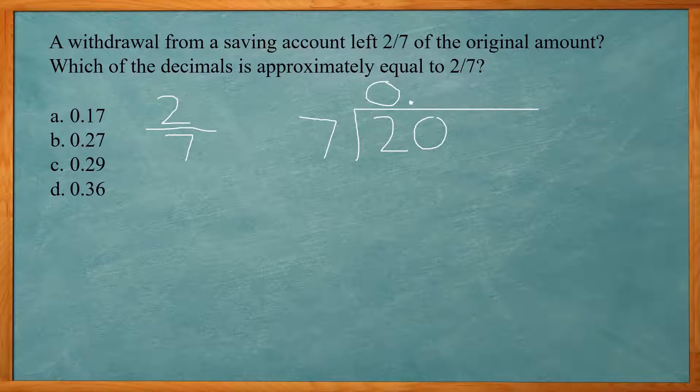So seven times two is 14. Seven times three is 21. 21 is too high. So we got to go with two. Two times seven is 14. Write that underneath here. Now you do 20 minus 14. That leaves us with six.